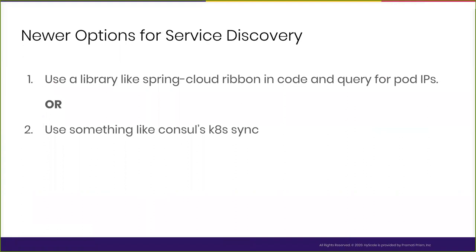After the migration, some other options have come up. You might want to use something like the Ribbon library if you're using Spring, or similar libraries in other languages, which help you query the Kubernetes API for pod IPs in your code. Consul and even Eureka now have libraries or ways to set up a sync between their service discovery and Kubernetes service discovery. We haven't used this in production and aren't sure about out-of-sync issues with broken networks, but these options exist.